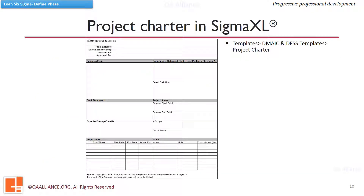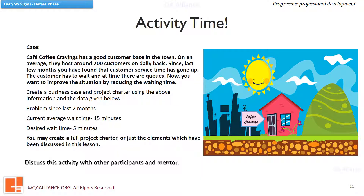Here is a template of a project charter that is available in the tool Sigma Excel, which we provide as a complimentary tool to our Green Belt course participants opting for professional or premium training. It is also available for a one-month trial on their website.